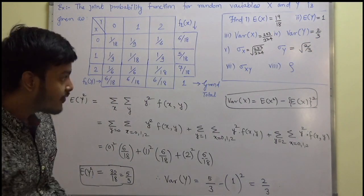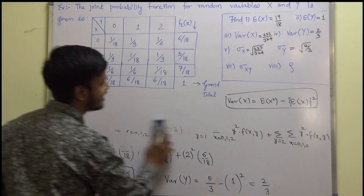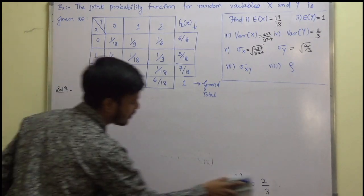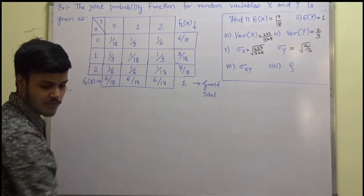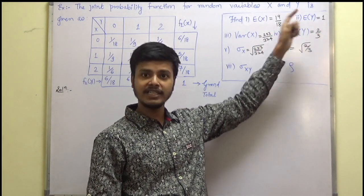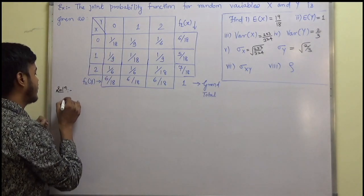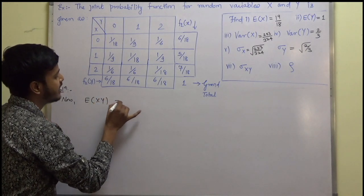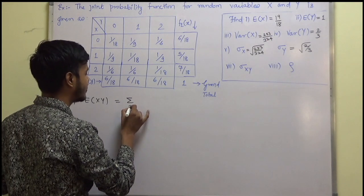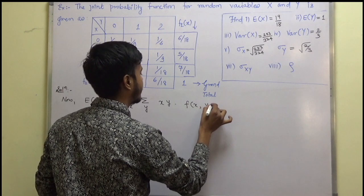Now we have to find covariance. For covariance of x and y we need expectation of xy minus expectation of x times expectation of y. So let us first find expectation of xy. Expectation of xy equals the summation over x and y of x times y times f(x, y). We just pick up the values from the table for each combination of x and y.